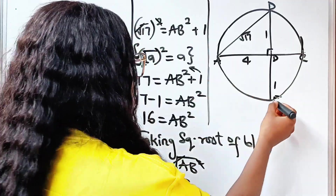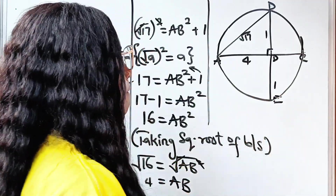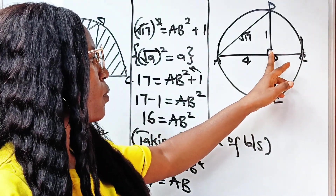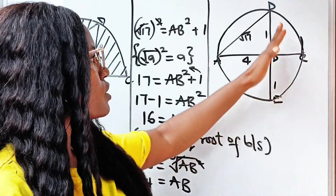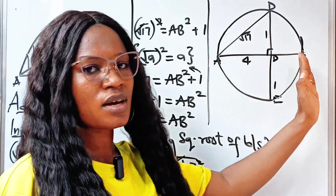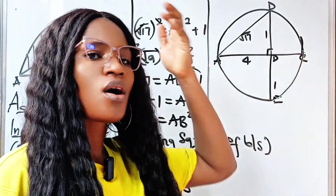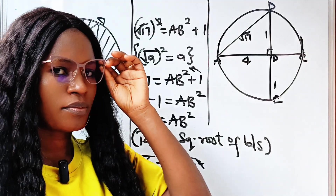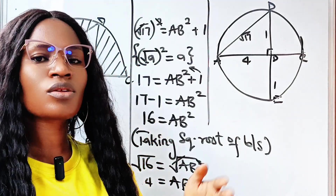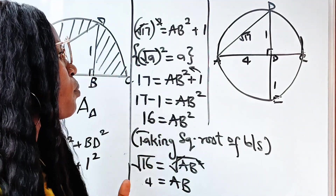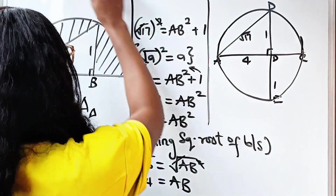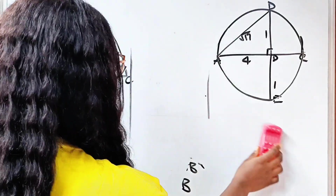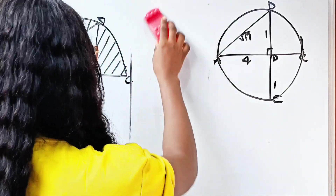If we complete this circle, we can see that we have a meeting point between two chords of this circle. So using the chord-chord power theorem — let me explain what that states.